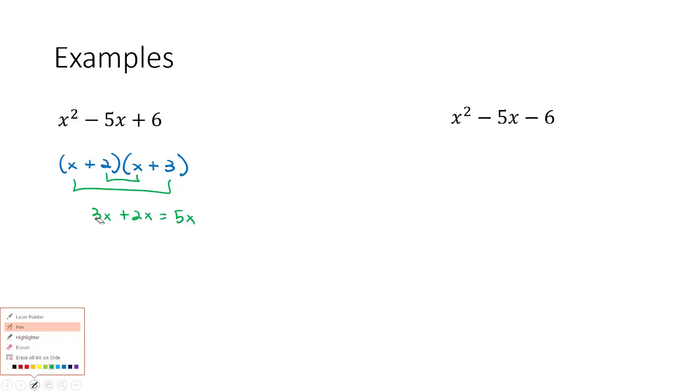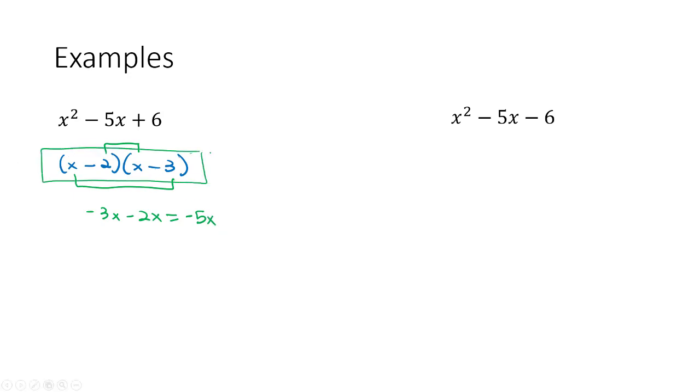We don't want +5x, we want -5x. So maybe to switch that, we'll switch the signs. Try them with both negatives. Now on the outside we've got -3x. On the inside we've got -2x. And -3x and -2x is -5x. Our answer is correct.